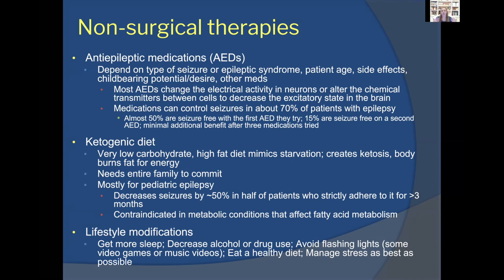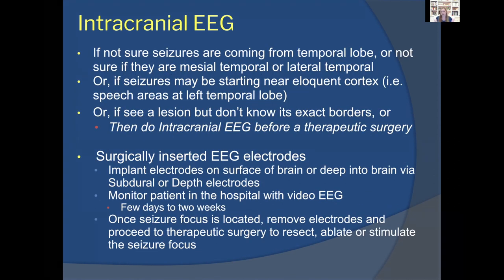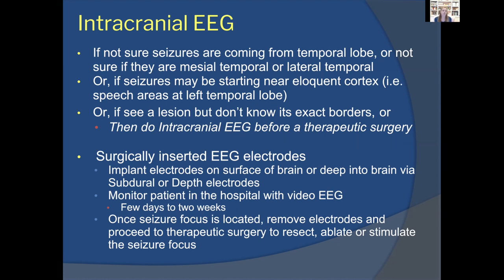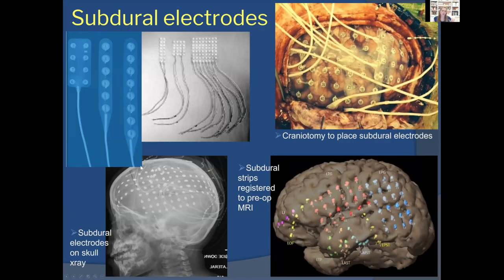If medications, dietary changes, and lifestyle modifications haven't controlled seizures, we discuss surgical options. The diagnostic surgery we may offer is an intracranial EEG — if we're unsure whether seizures come from one or both hippocampi, from the mesial or lateral temporal lobe, or if the suspected focus is near eloquent cortex like the speech area, we may place EEG leads on or deep within the brain. This involves surgically inserted EEG electrodes monitored during video EEG hospitalization for days or weeks before proceeding to therapeutic surgery. There are two approaches: subdural electrodes or depth electrodes.